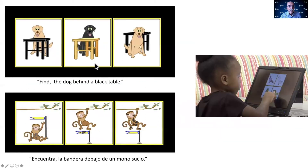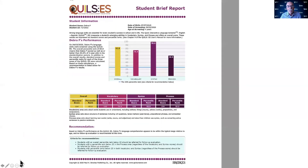The process: there's an English and a Spanish version. For example, 'find the dog behind the black table,' or 'encuentra la bandera debajo de un mono sucio.' The child selects the item, and then a report is produced. The report provides an overall score, a vocabulary score, a syntax score, and a process score, as well as recommendations for further assessment, if necessary.